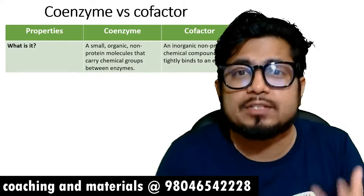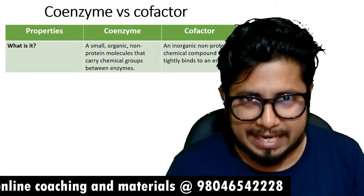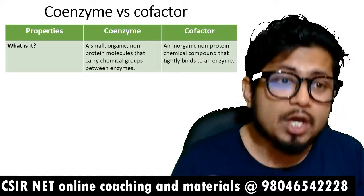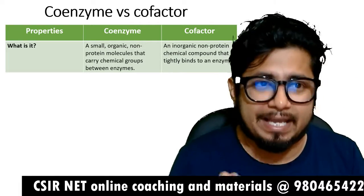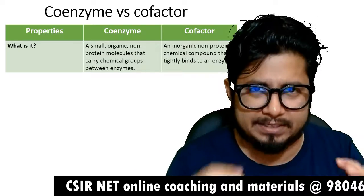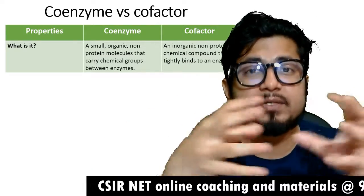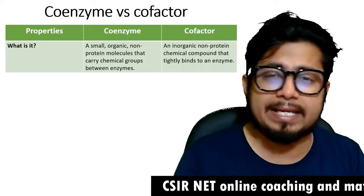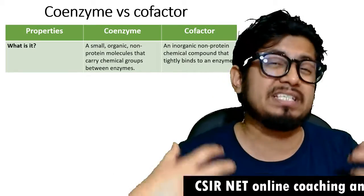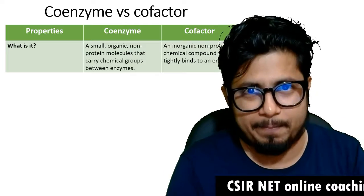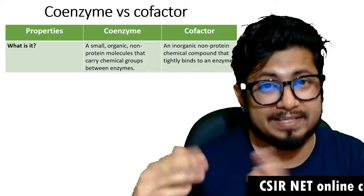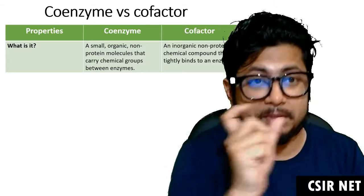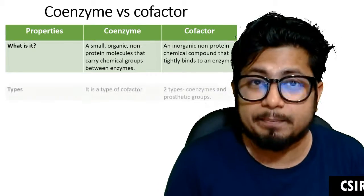They are related to enzymes. Coenzymes are small organic non-protein molecules that carry chemical groups between enzymes — there are some chemical groups present between enzymes, and that is the coenzyme. While cofactors are inorganic non-protein chemical compounds which are tightly bound to an enzyme or maybe some other proteins, behaving like a catalyst.